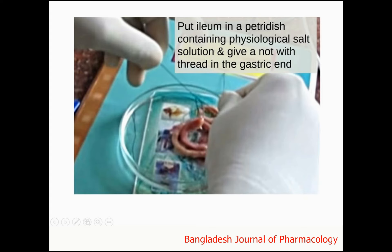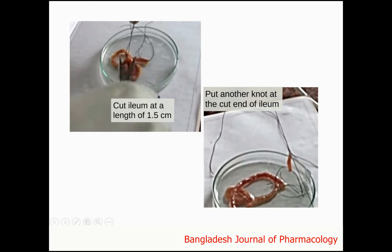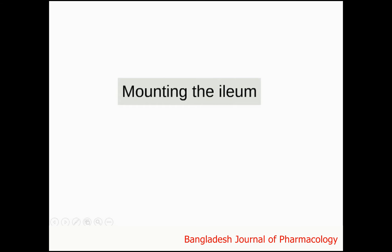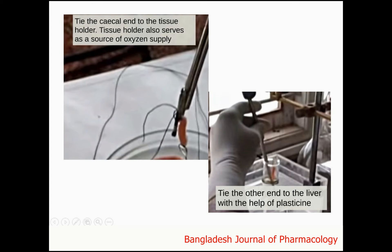Put the ileum in a petri dish containing physiological salt solution and give a knot with thread in the gastric end. Cut the ileum at a length of 1.5 cm and put another knot at the cut end of the ileum. The next step is mounting the ileum: tie the kegel end to the tissue holder, which also serves as a source of oxygen supply. Tie the other end to the lever with the help of plasticine.